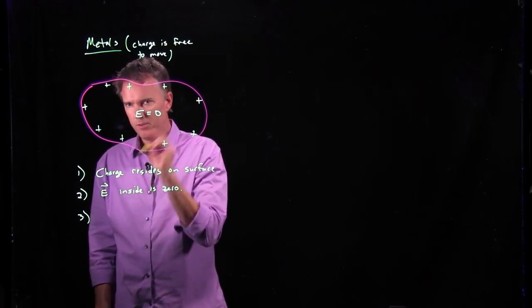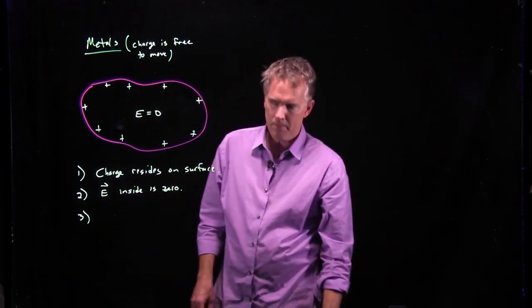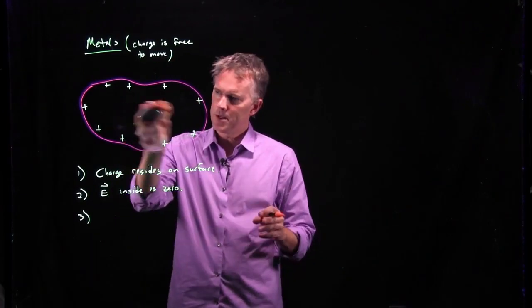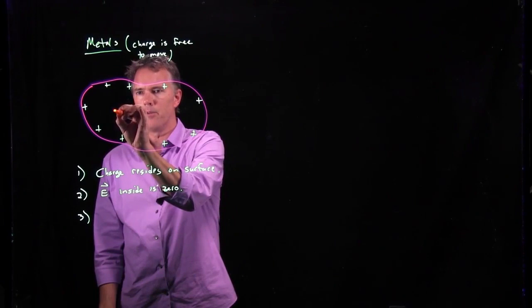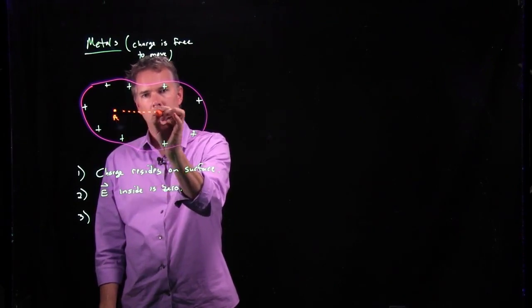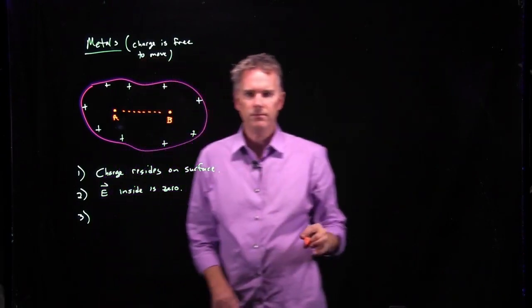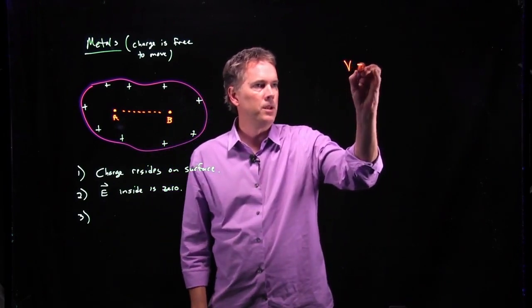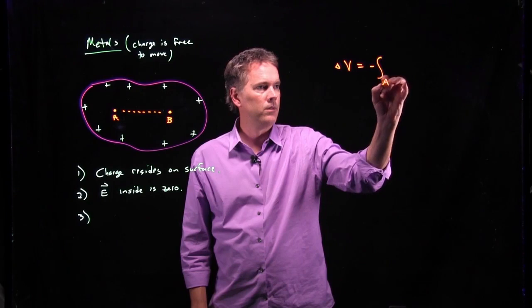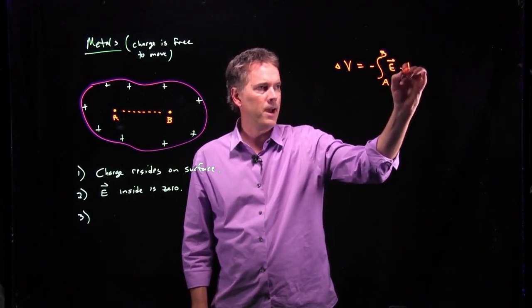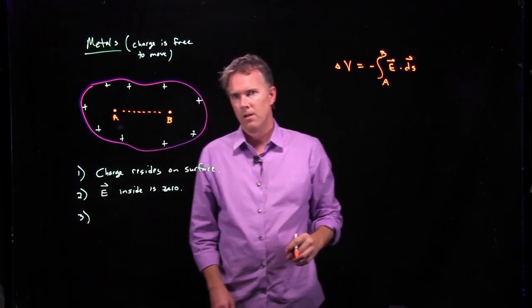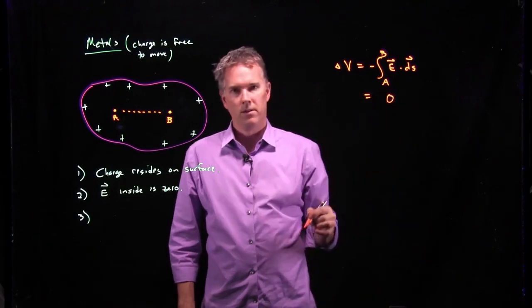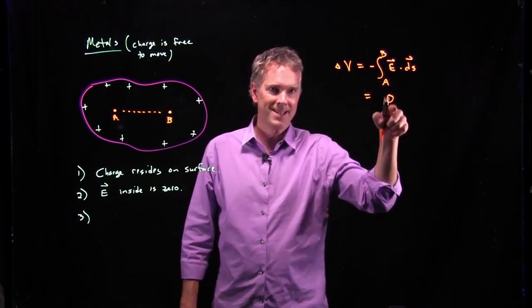If the E field is zero inside, what does that mean in terms of the potential? Well, when we were calculating potential, we said if I go from point A to point B and I want to look at the potential difference, that potential difference is going to be the integral of E over that path. But it's zero. The electric field in there is zero. And so the potential difference is zero.